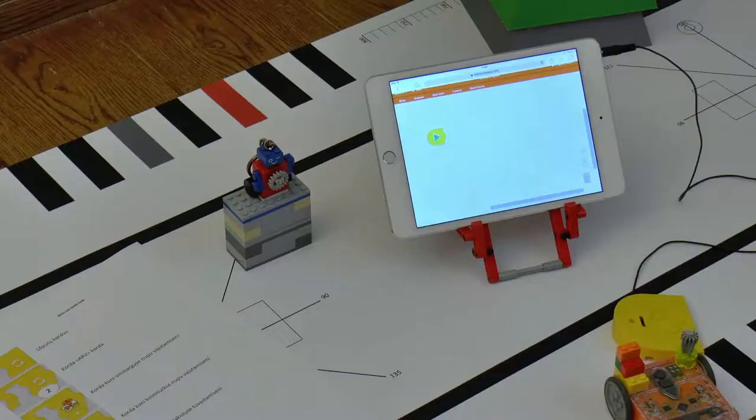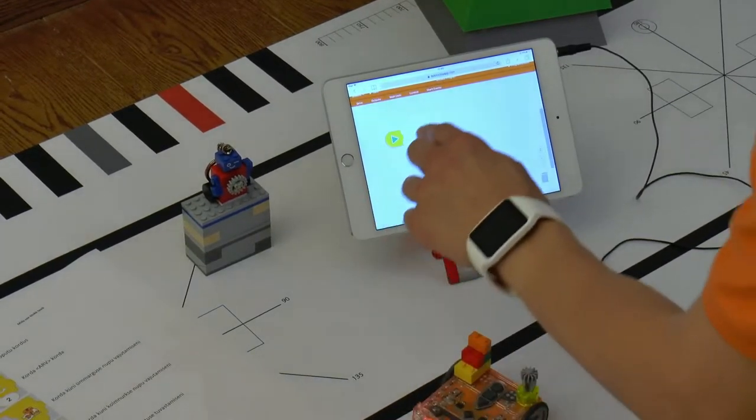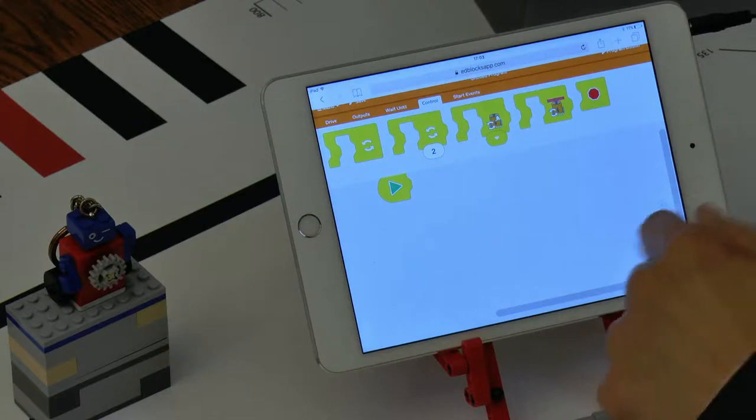For revision, also take a look at the Control Blocks sheet. Edison's Control Blocks are located in the menu section Control. There are five blocks here in total and one of them has two modes.